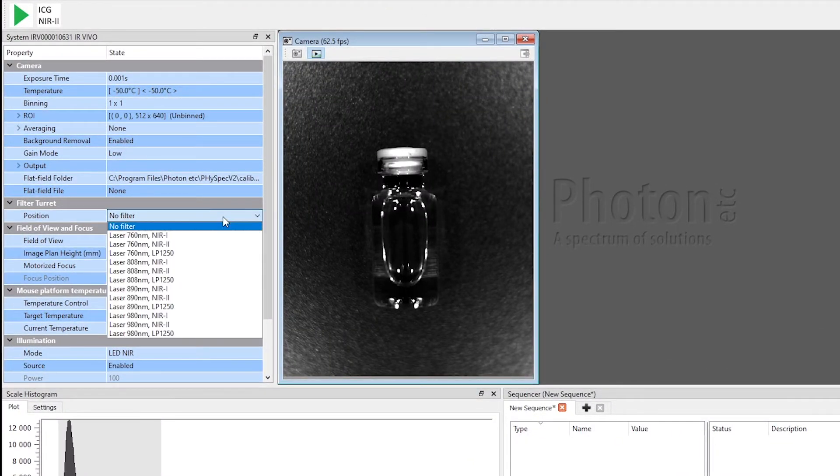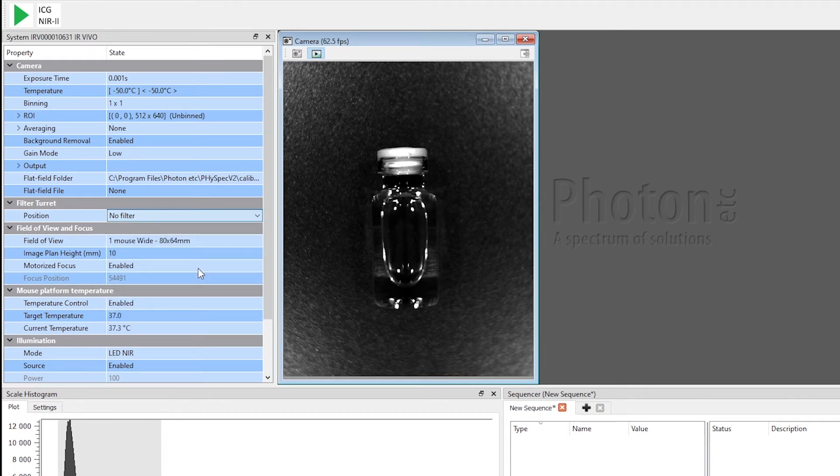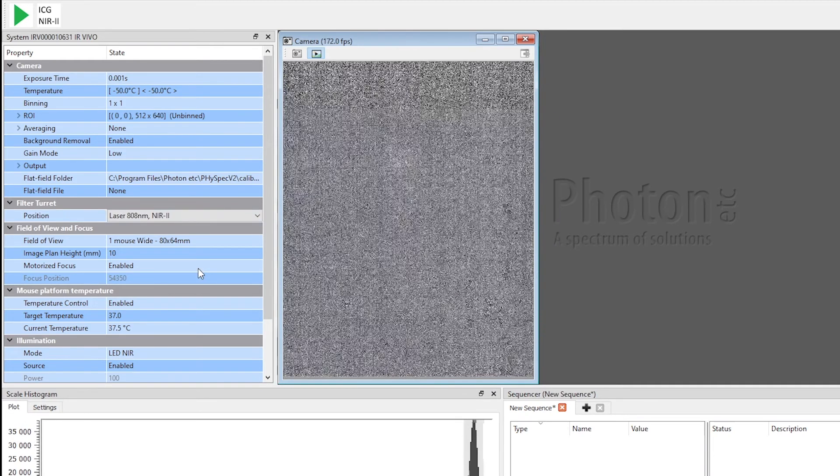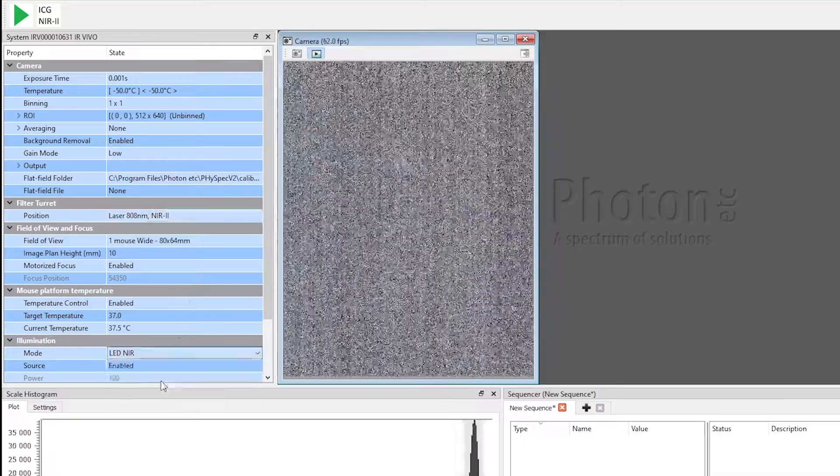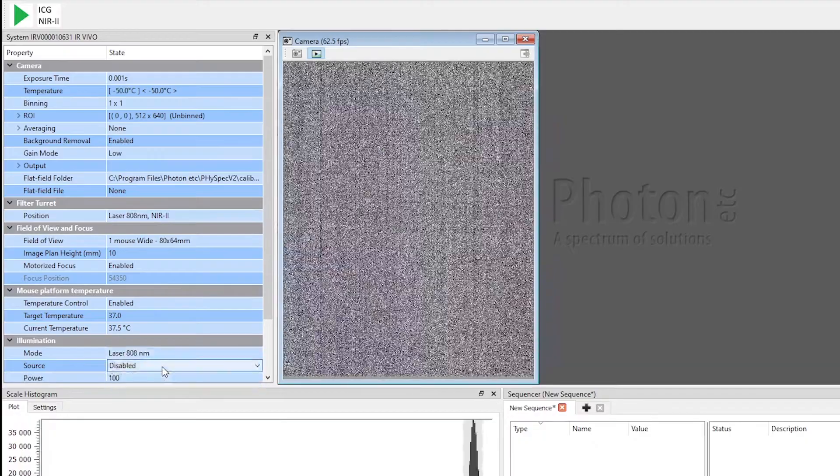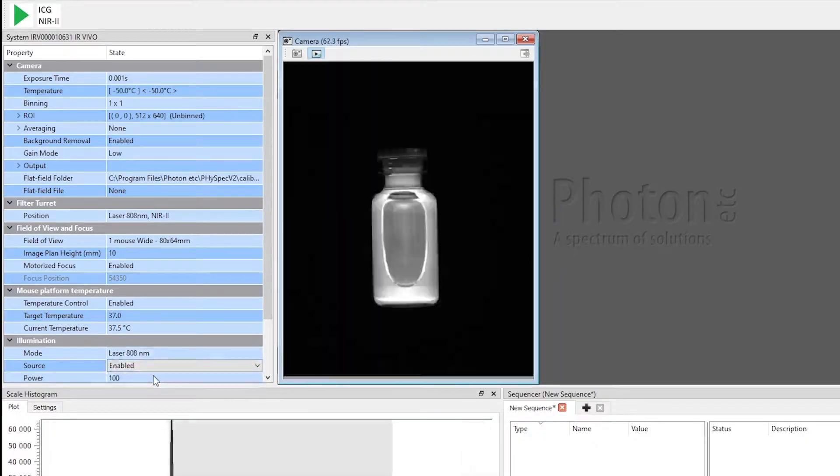Then, to capture the fluorescence, we need to set a filter matching the laser. In this case, ICG works best with an 808 laser, so I chose the filter accordingly. Then, I'm selecting the 808 laser. And as soon as I enable it, I get to see the fluorescence very clearly in real time.